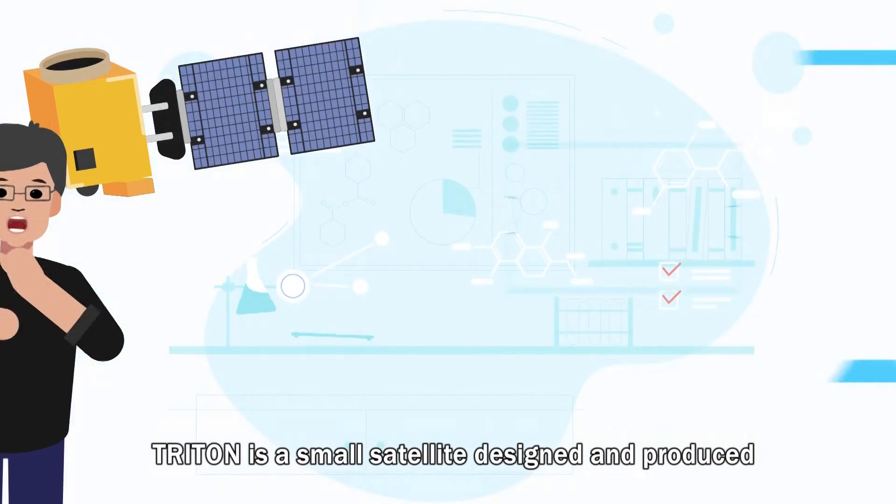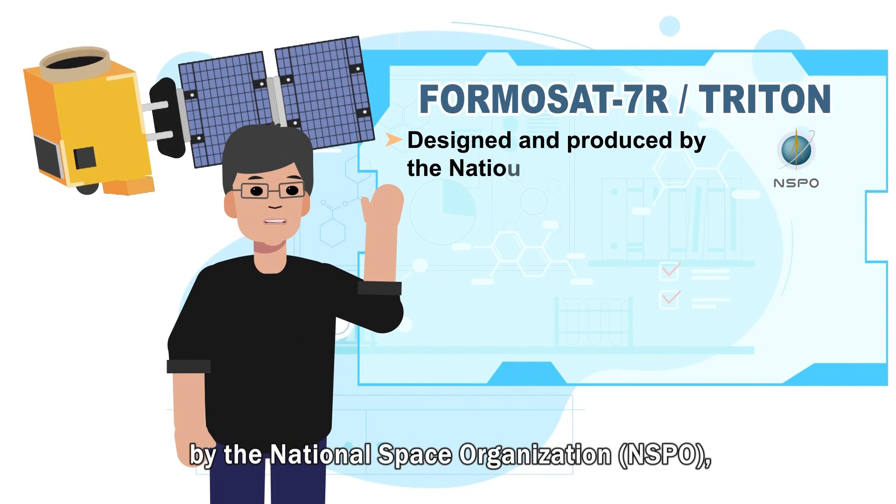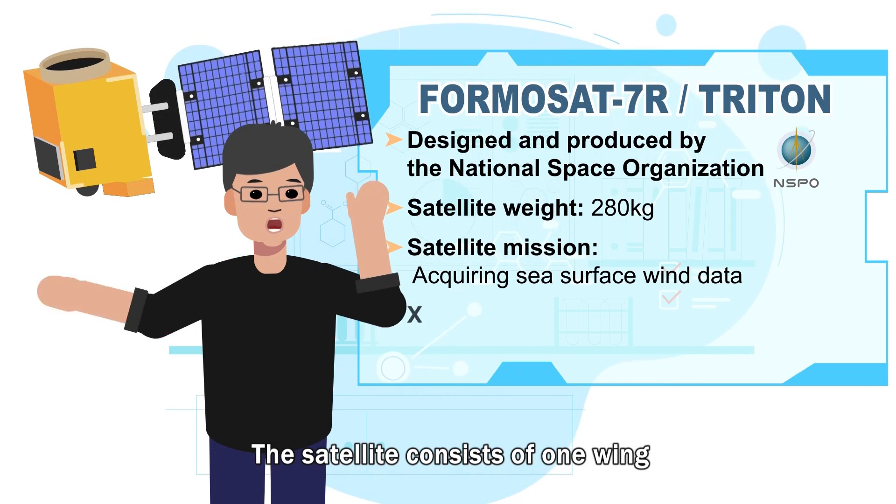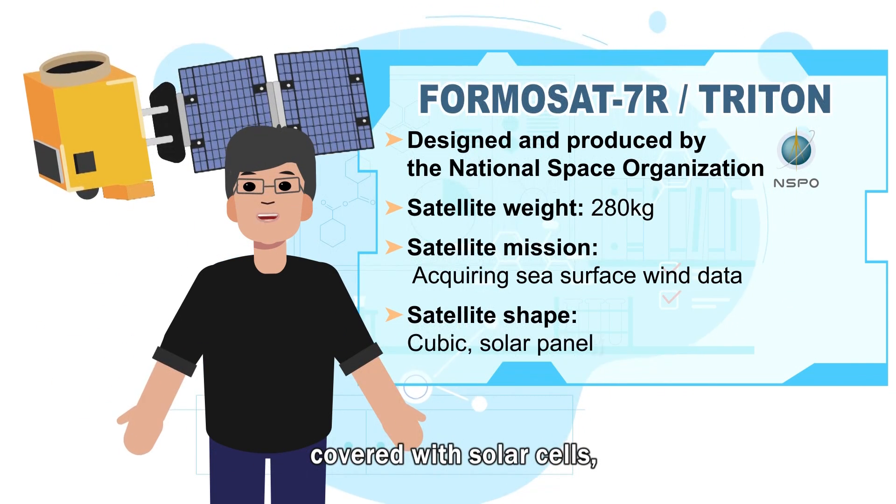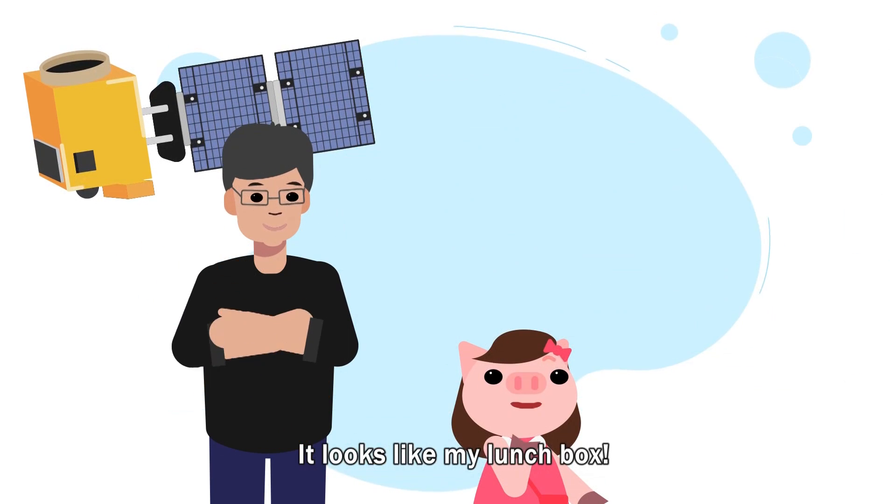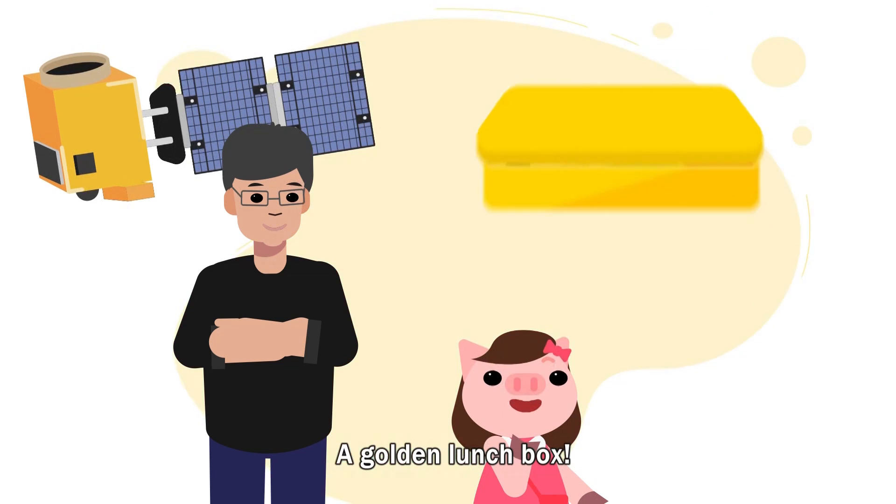Triton is a small satellite designed and produced by the National Space Organization, NAR Labs, and weighs 280 kilograms. The satellite consists of one wing covered with solar cells and a gleaming rectangle called the golden lunchbox. Wow! It looks like my lunchbox! A golden lunchbox!